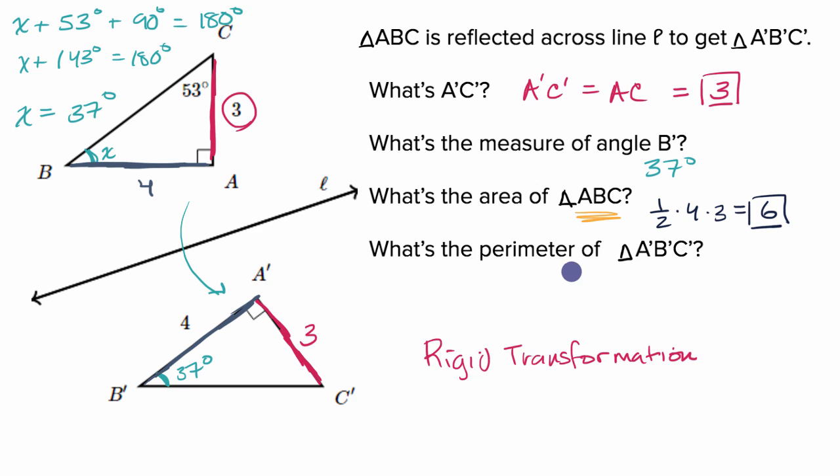And then last but not least, what's the perimeter of triangle A prime B prime C prime? Well, here we just use the Pythagorean theorem to figure out the length of this hypotenuse. And we know that this is a length of three based on the whole rigid transformation and lengths are preserved.